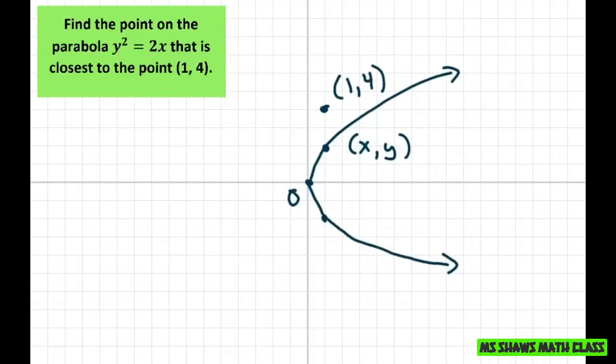So I kind of just sketched a little graph here. Here's your parabola that opens up to the right. And here's your point. And we want to find the closest point that's closest to it. So it'd be something like this. And there's a point here xy. What's the closest point to that?